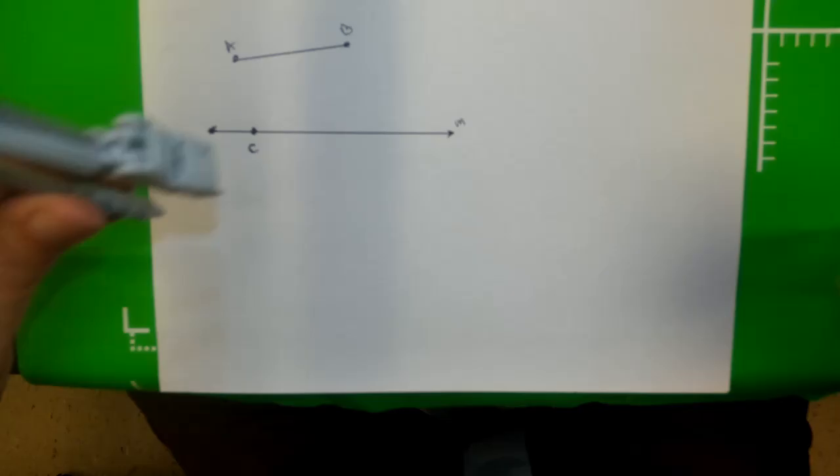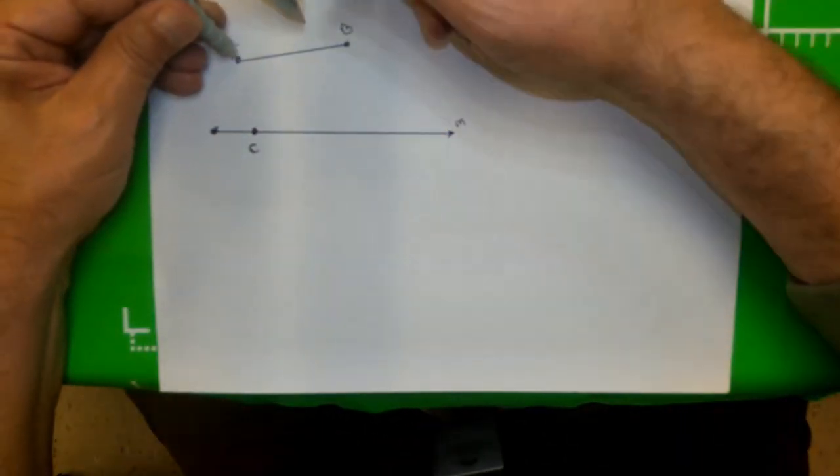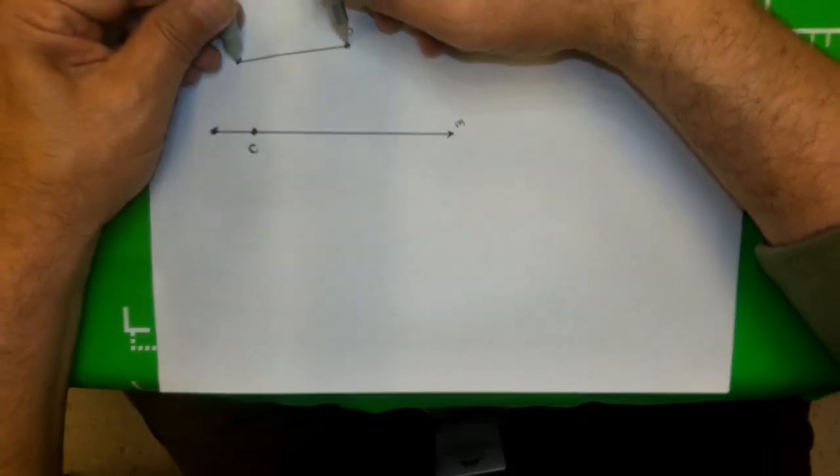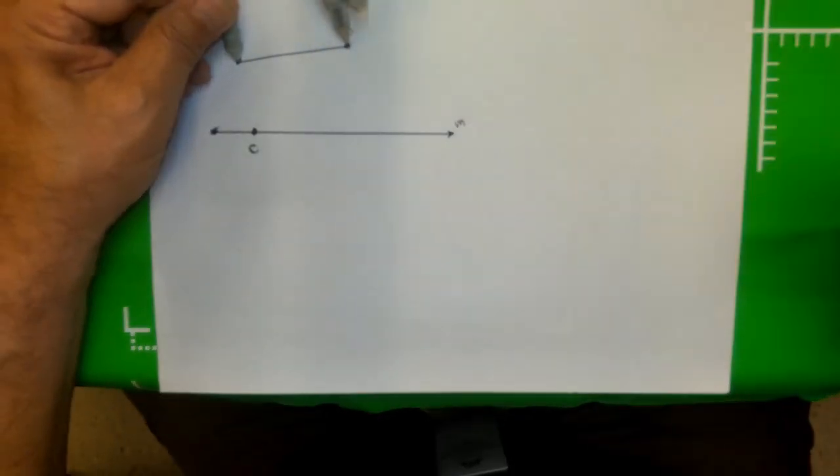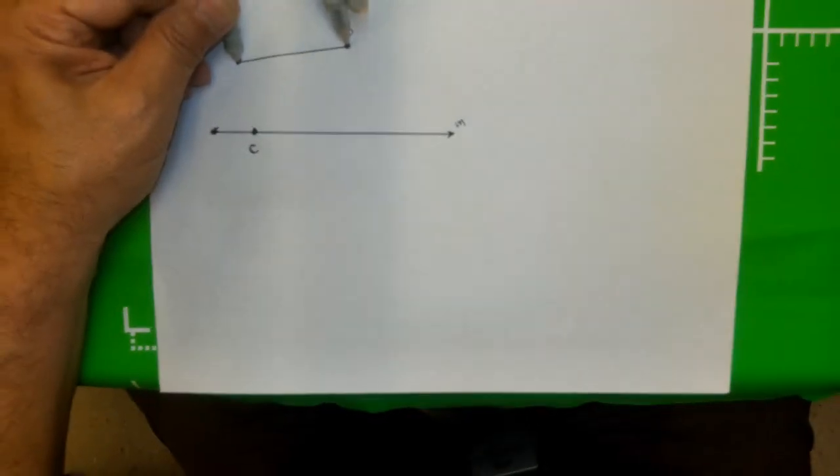Now my next thing will be to use this tool which is called a compass. And with this compass, you notice I'm opening the compass like this, and that's how long the segment AB is.